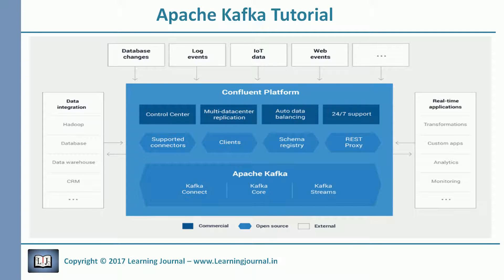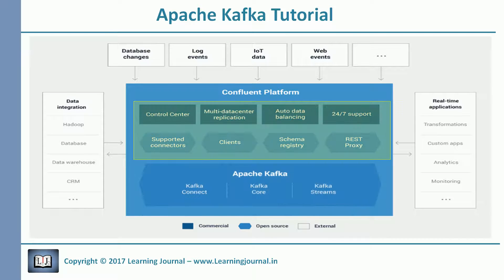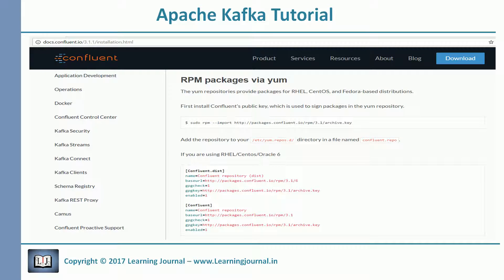The Confluent platform is in fact Apache Kafka packaged together with additional components. All these elements together with Apache Kafka make it a flexible and powerful streaming platform. There are many ways you can download and install the Confluent platform. I am going to use RPM packages via yum. I will follow the Confluent documentation and you can follow my screen capture.